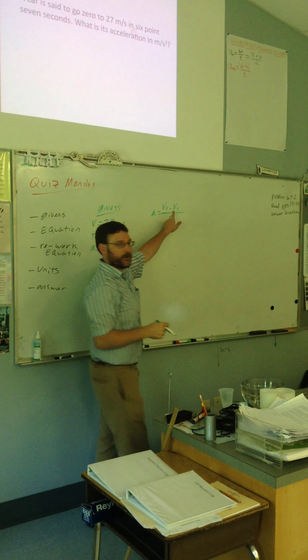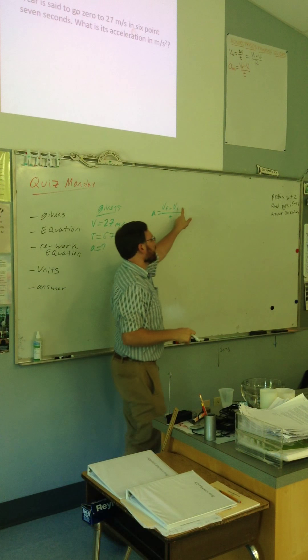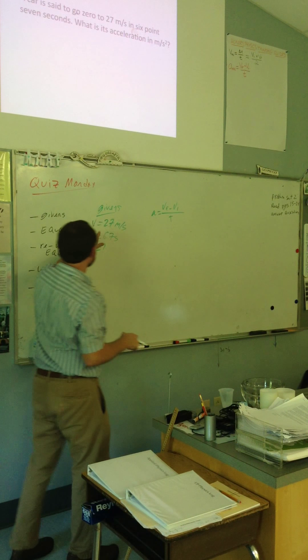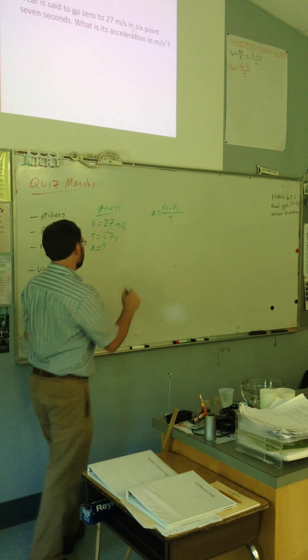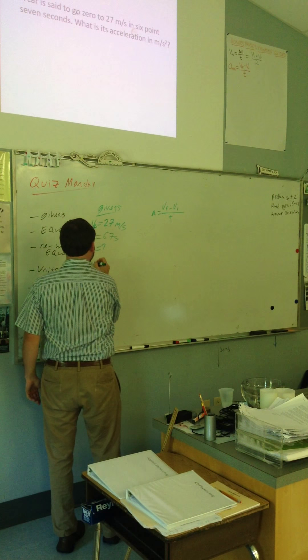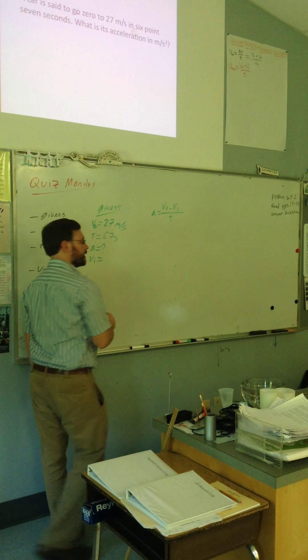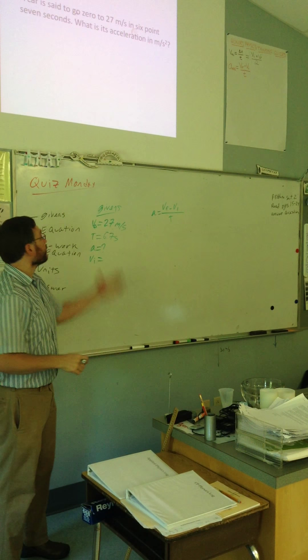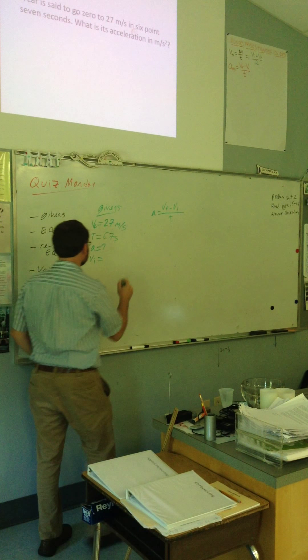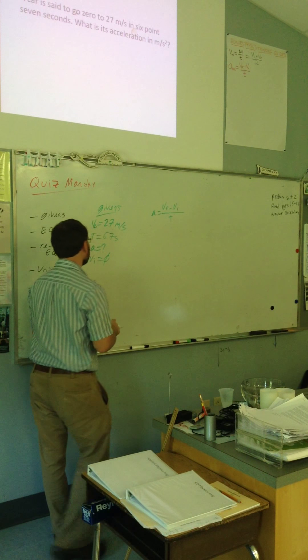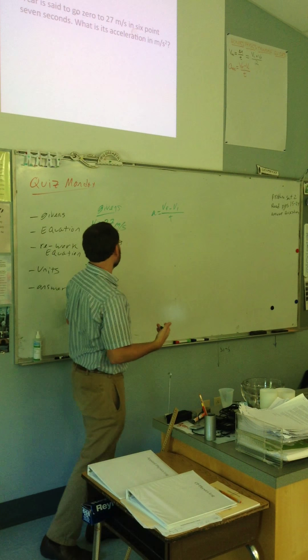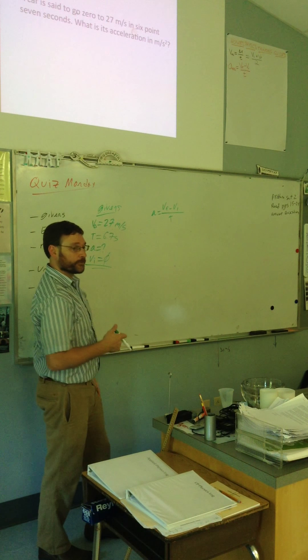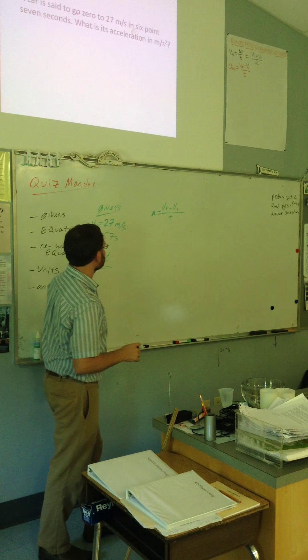Alright, so VF is final velocity. VI is initial velocity. What velocity is 27 meters per second? That's final velocity, right? So, if that's final velocity, what is initial velocity in this case? Zero. Zero, because it goes from zero to 27, right? So, our initial velocity is zero. This is something you kind of have to assume here. And we're assuming it based on what the phrasing of the question is.